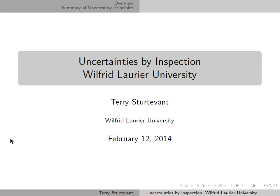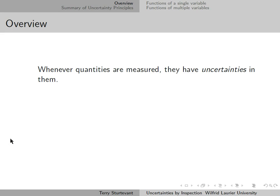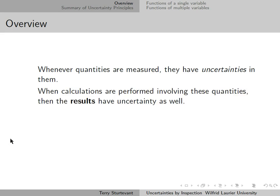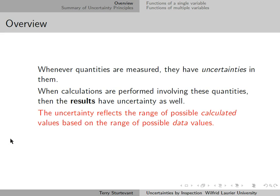This document is about how to calculate uncertainties by inspection. Whenever quantities are measured, they have uncertainties in them. When calculations are performed involving these quantities, then the results also have uncertainties. The uncertainty reflects the range of possible calculated values based on the range of possible measured data values.